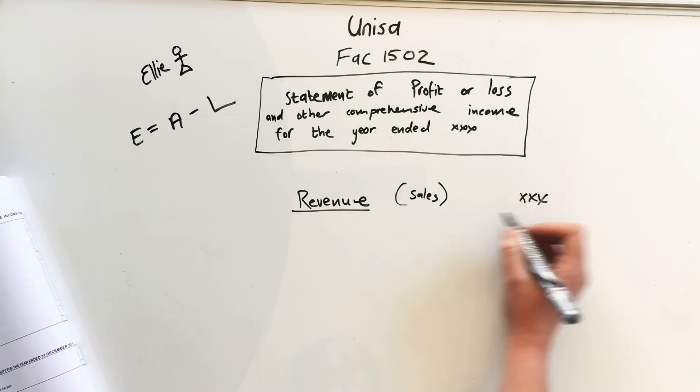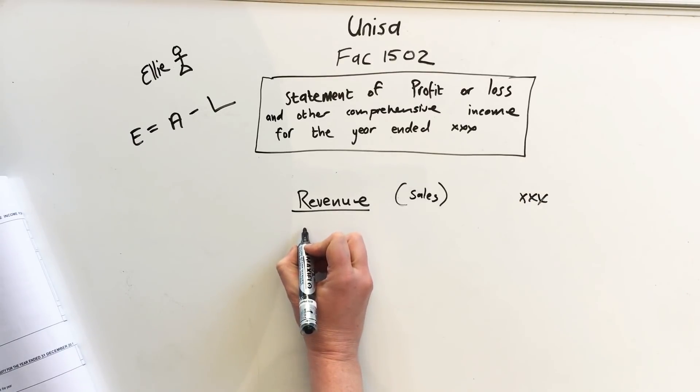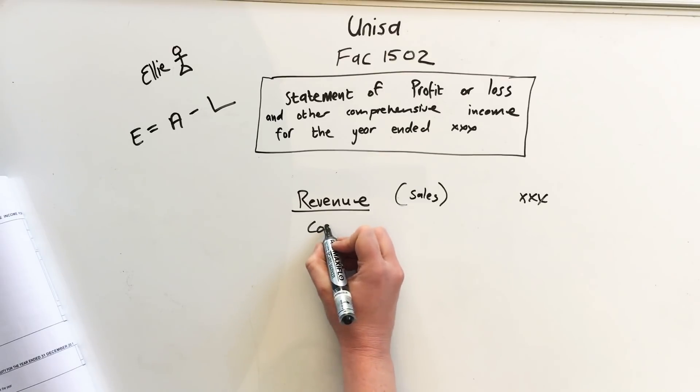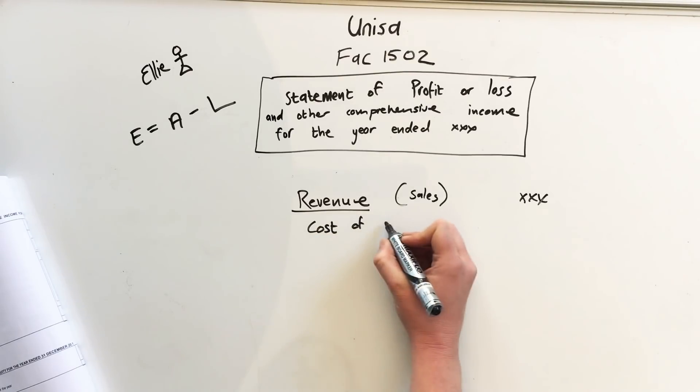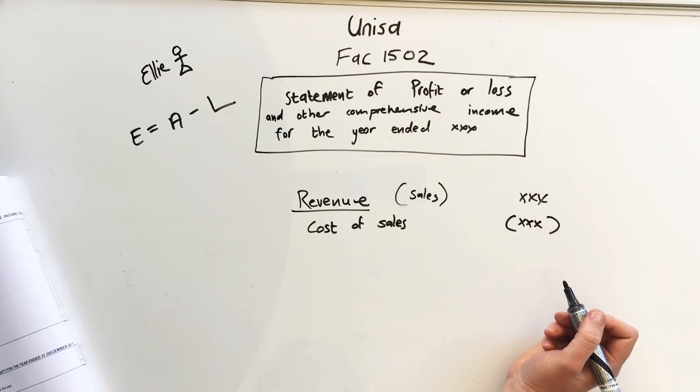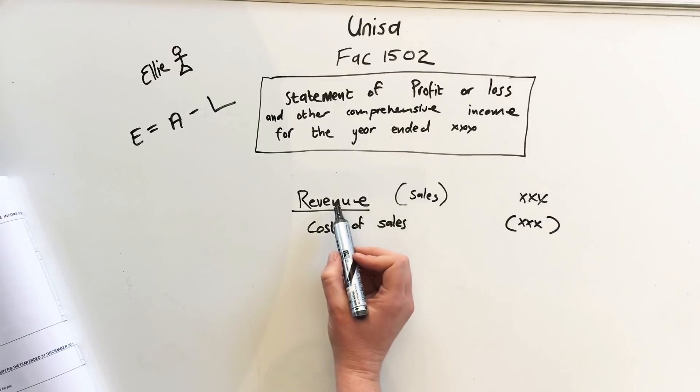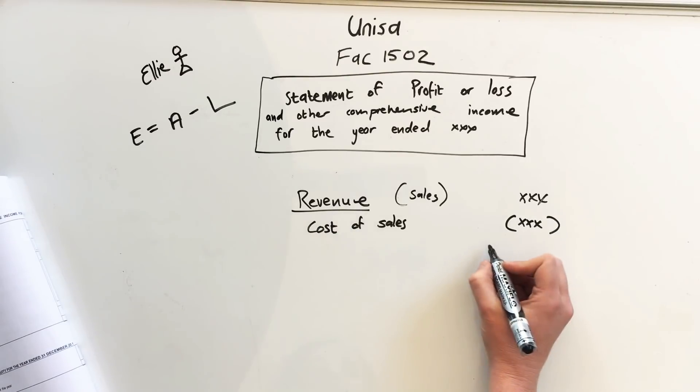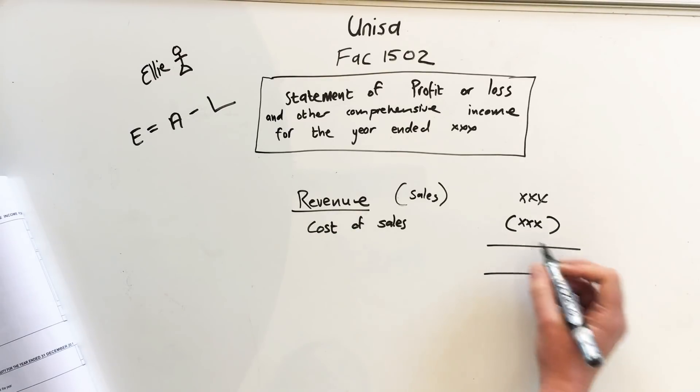Revenue, and you'll have your amount. Then you have cost of sales if you're selling product. So if you're selling pizza, this is the cost of the pizza that comes over here. We put it in brackets because we are going to minus it. And then all we do is we say revenue minus cost of sales, so that bracket means minus, and that gives us an amount.